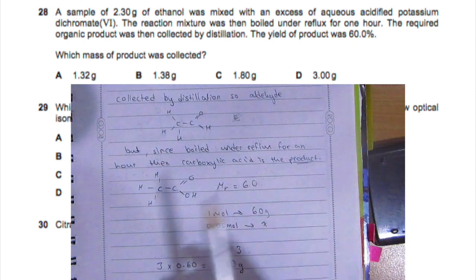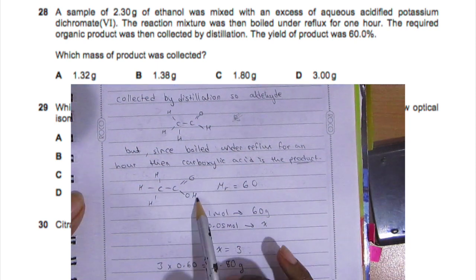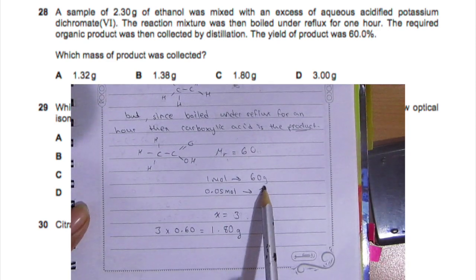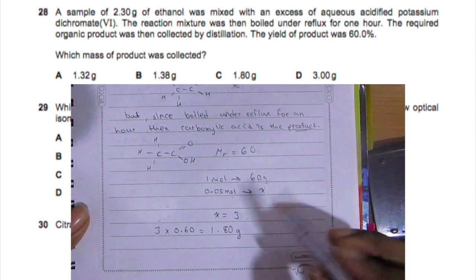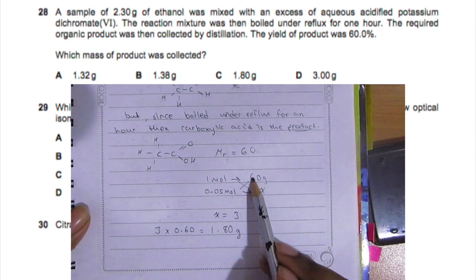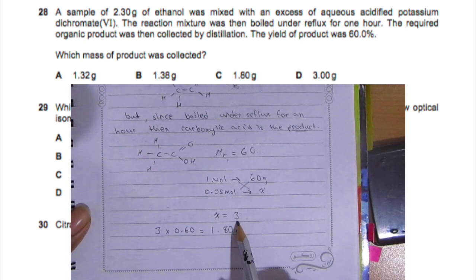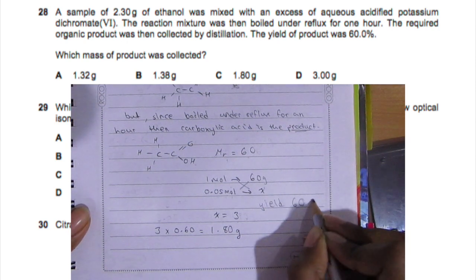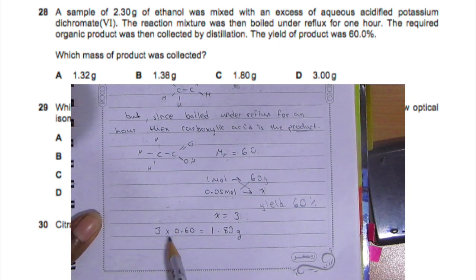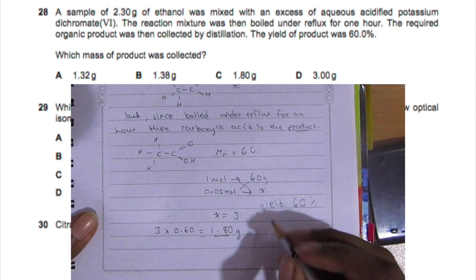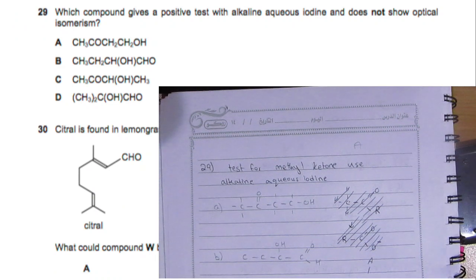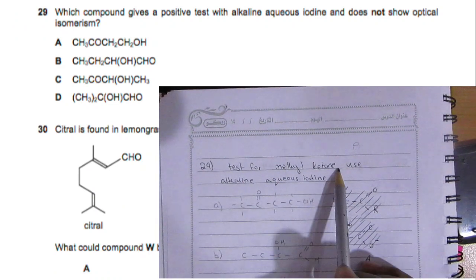Now it's collected by distillation, so it should be aldehyde. But because it is boiled under reflux for an hour, then carboxylic acid is the product. So you have here carboxylic - the MR is 60. So one mole is 60 grams, 0.05 moles is x. Cross multiply - 60 times this x will give you 3. But then they told us it only yielded 60 percent, so change that to decimal. So 3 times 0.60 equals 1.80 grams, so the answer is C.